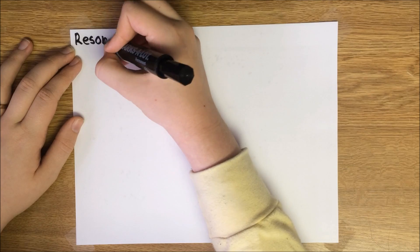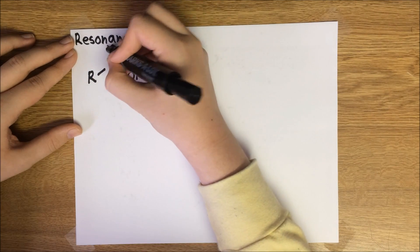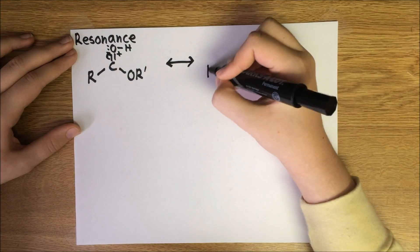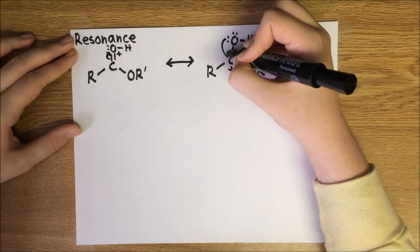Step 5 formed another oxonium ion that has resonance. The carbonyl pi electrons migrate to the oxygen, moving the positive charge to the carbon. This carbocation is similar to the previous one in that it only contributes a little bit to the resonance.